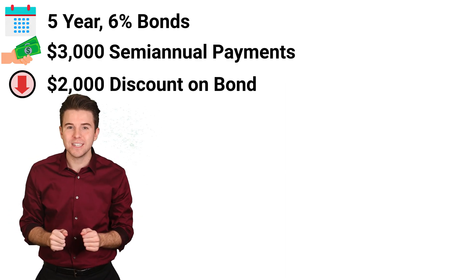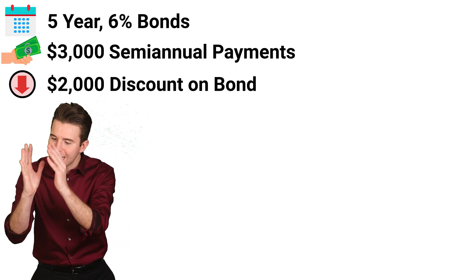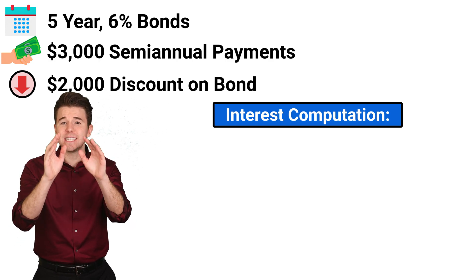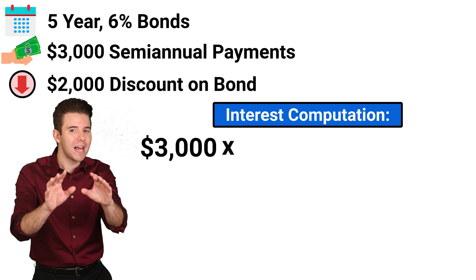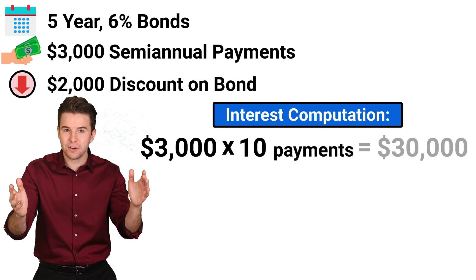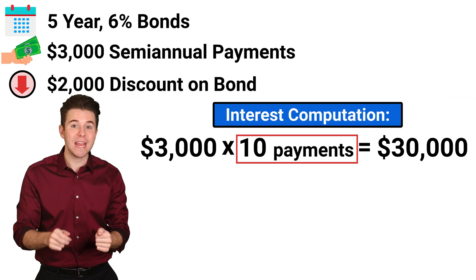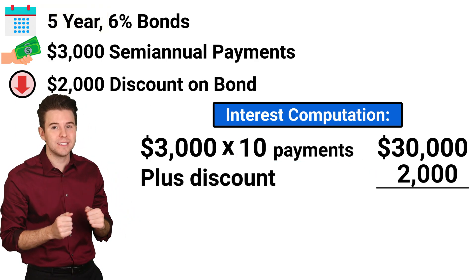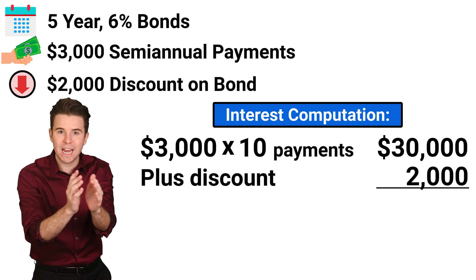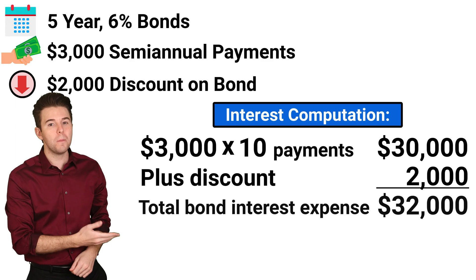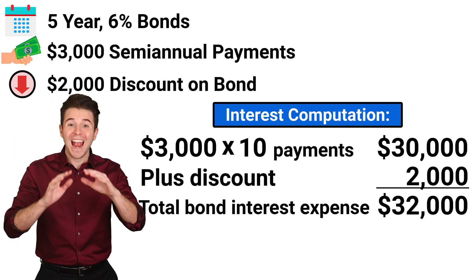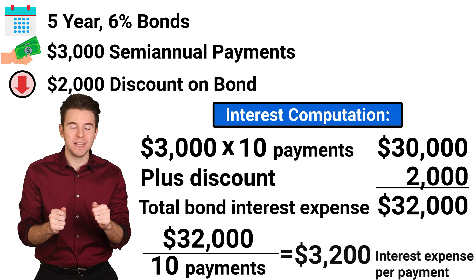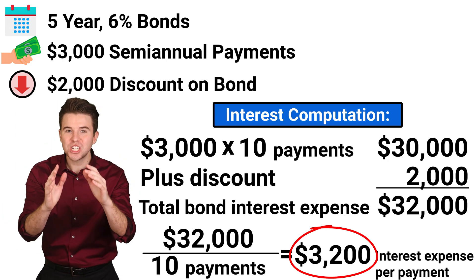Now, to amortize the $2,000 discount and record interest expense for each semi-annual interest payment, we have to do a short calculation. First, we take the semi-annual interest payment of $3,000 and multiply it by 10 payments to get $30,000. We use 10 payments because we must make 2 payments per year for 5 years. Next, we add in the $2,000 discount, as this amount must be expensed over the 10 payments. This gives us total bond interest expense of $32,000, and we divide that by 10 payments, giving us bond interest expense of $3,200 for each semi-annual payment.